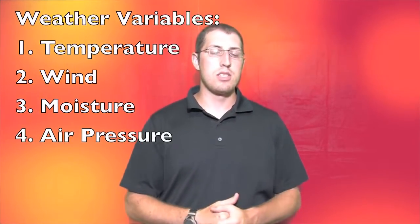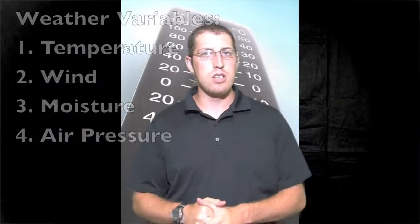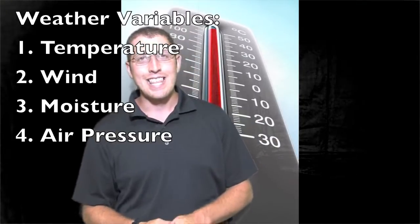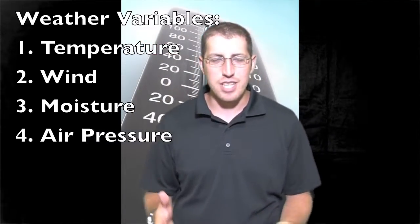There are certain instruments that measure these variables. Temperature is measured with a thermometer. Wind speed is measured with an anemometer — we're going to show you what that looks like right behind me. Wind direction is measured with a weather vane — a little thing with a little rooster on it.